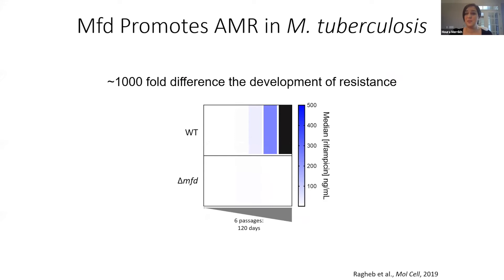My MD-PhD student Mark Ragib set up an evolution assay with TB in BSL-3, which is a very difficult task given how slowly mycobacterium tuberculosis grows. But the amazing thing was that we saw the most dramatic results in those evolution assays — at the end of the experiment, there was about a thousand-fold difference in the development of resistance. Basically, we don't see evolution of resistance to rifampicin in mycobacterium tuberculosis to any detectable level under these experimental conditions if we don't have MFD.